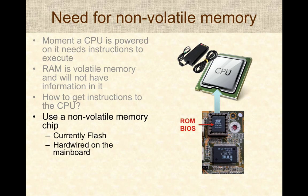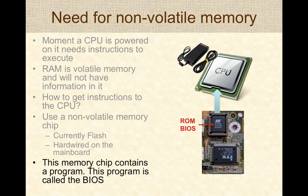The answer is to use non-volatile memory. Currently, the technology used on most modern computers is called flash, which stores data and retains it even when power is lost. The flash memory is typically hardwired onto the motherboard, and this flash memory contains the initial set of instructions that the CPU starts executing. This memory chip essentially contains a program called a BIOS, which is an acronym for Basic Input-Output System.